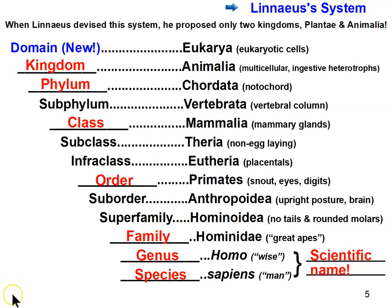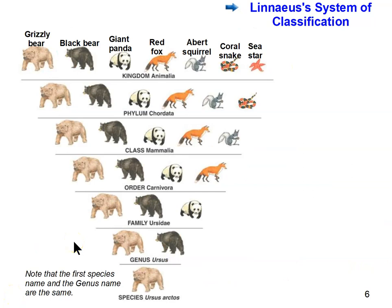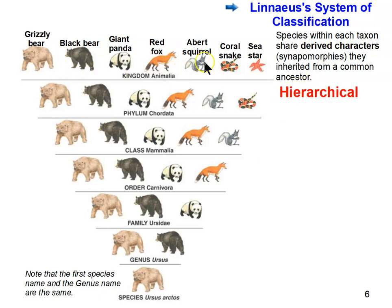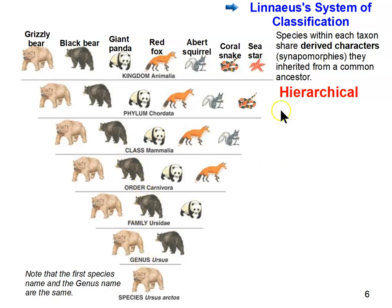Life, domain, kingdom, phylum, class, order, family, genus, species. This is another representation of the same classification system, this time for grizzly bears. It illustrates that the system is hierarchical. Each level is called a taxon (or taxa), and each taxon includes species that share derived characters — synapomorphies — inherited from a common ancestor.